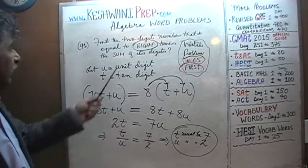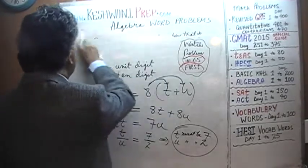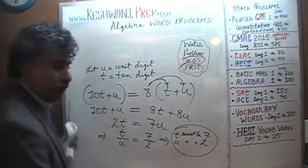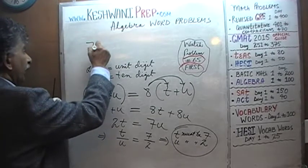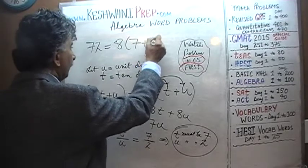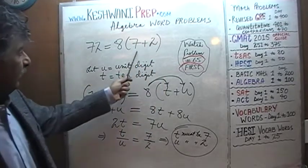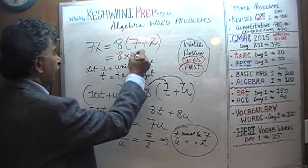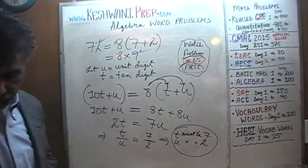Let's quickly verify that. We are claiming the number is 72, and 72 has to equal 8 times the sum of its digits, which is 8 times the quantity 7 plus 2. That is 8 times 9, which is 72. Confirmed — the answer is 72.